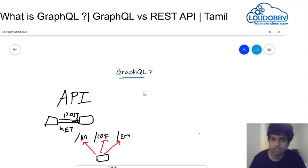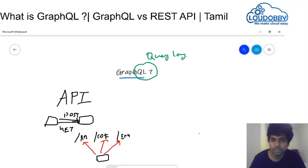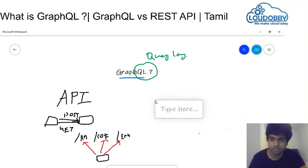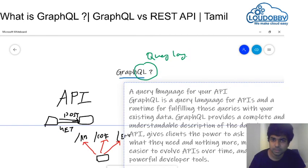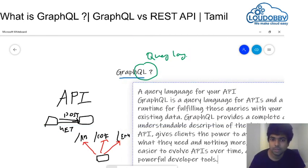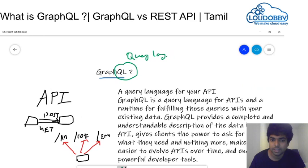In GraphQL, you will note that QL is a query language. So QL is nothing but query language. If we are going to talk about the definition — GraphQL is a query language for API.